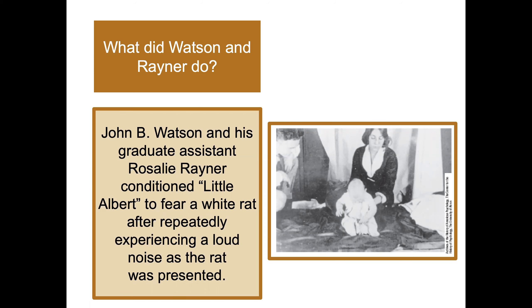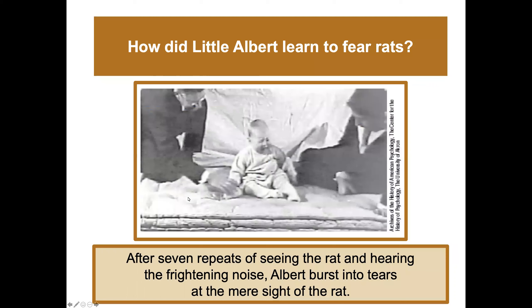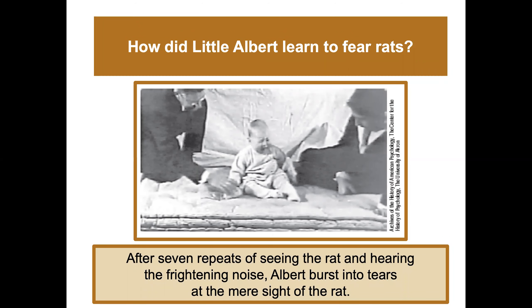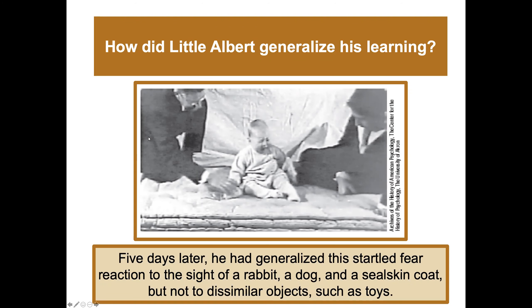Watson and Rayner conditioned Little Albert to fear a white rat after repeatedly experiencing a loud noise as the rat was presented. After seven repeats of seeing the rat paired with a frightening gong-like noise, Albert burst into tears at the mere sight of a rat. Five days later he had generalized the startled fear reaction not only to the rat but to a rabbit, a dog, and a seal skin coat — though he learned to discriminate and did not fear dissimilar objects such as toys.